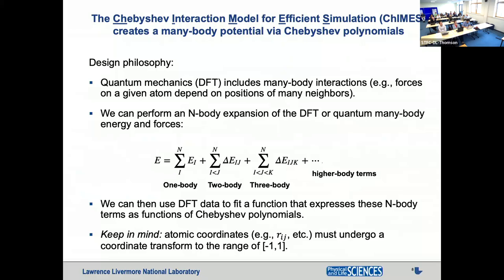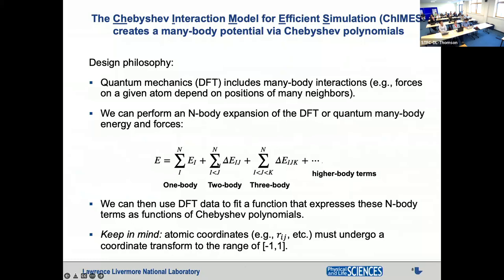Now we can move on to CHIMES. We create many-body Chebyshev polynomials following an N-body expansion heuristic. The philosophy is that quantum mechanics, particularly DFT, includes many-body interactions — a single atom interacts with many others simultaneously. So we say the DFT energy can be considered a sum of one-body terms, two-body terms (pairs), three-body terms, up to some N after which we truncate. We start with DFT, which has all these N-body interactions, and express each term as a linear combination of Chebyshev polynomials. The polynomials have a range of minus one to one, so a coordinate transform is required, switching between Cartesian Rij and the transformed Xij.